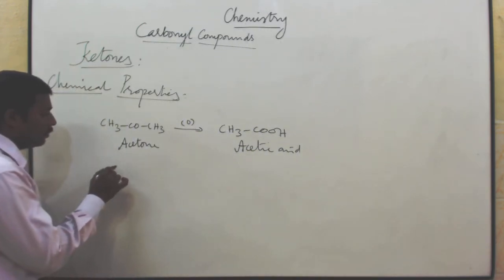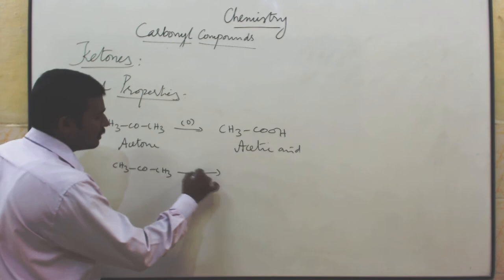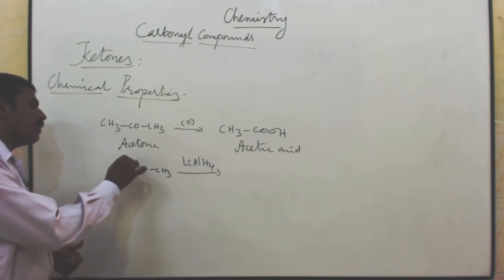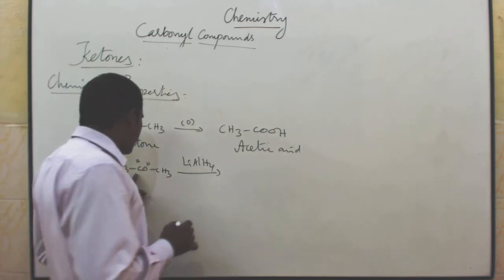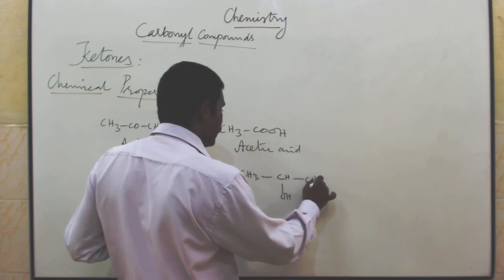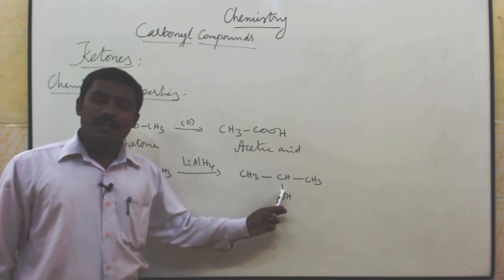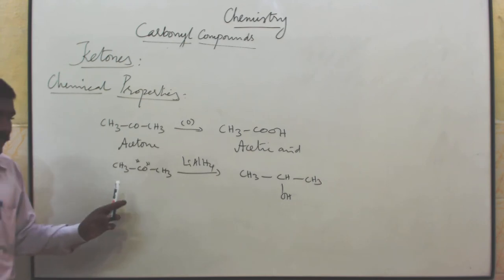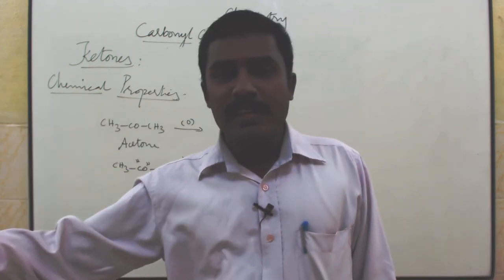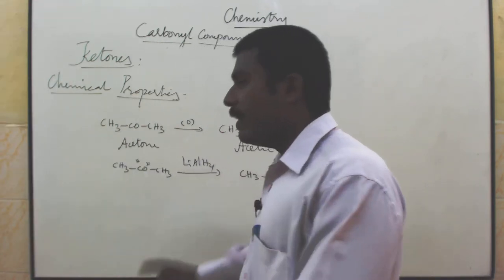Acetone undergoes reduction reaction. CH3COCH3 undergoes reduction reaction with lithium aluminium hydride. They are going to add two hydrogen atoms — one nearby oxygen and one nearby carbon. So it will become CH3CHOHCH3, namely isopropyl alcohol. Isopropyl alcohol is one of the secondary alcohols. Secondary alcohol undergoes oxidation to give ketone; ketone undergoes reduction reaction to give secondary alcohol as the product.